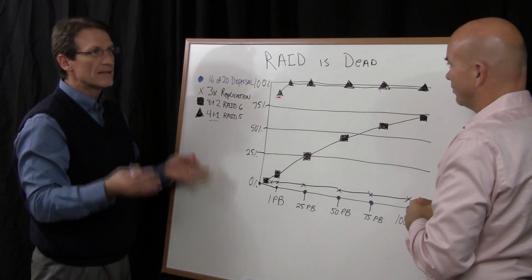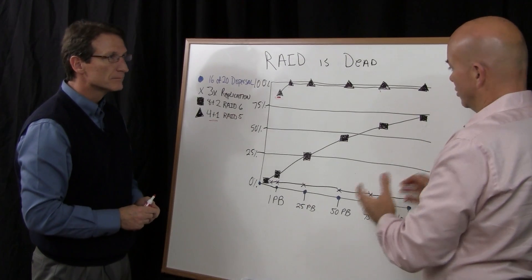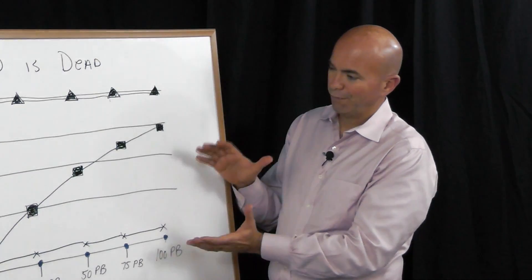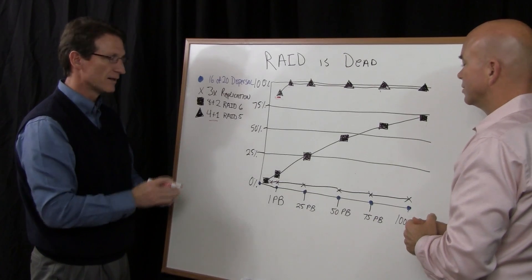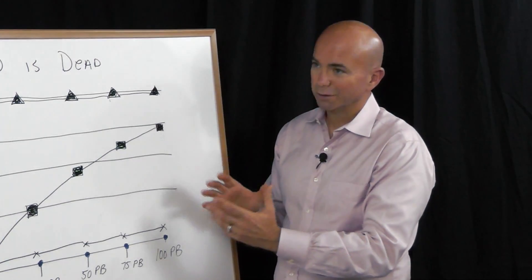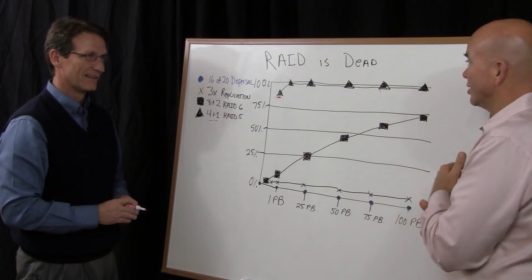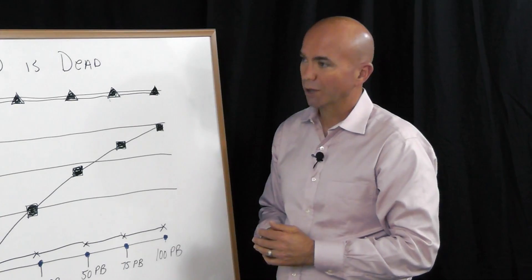So even with three times the amount of storage to protect your data, the chances of data loss are significant. So your costs are going up and your failure rate still is something you have to deal with. You're still not addressing the problem. And for many of these environments, any failure is a problem. So it doesn't matter if it could happen, it's the fact that it will happen and it's a problem for you.